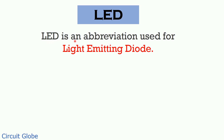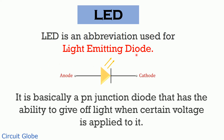LED is the short form used for light emitting diode. Let's have a look at the symbol of LED. LED is basically a PN junction diode that has the ability to emit or give off light when certain voltage is applied to its terminals. In the symbolic representation of LED, we can clearly see that its symbol is almost similar to a normal diode, but the only variation is the two outward arrows, which represent the emission of radiation through LED.